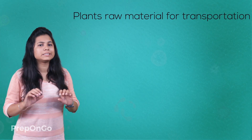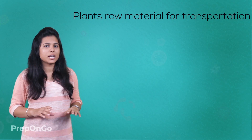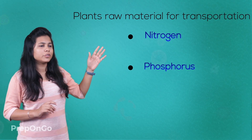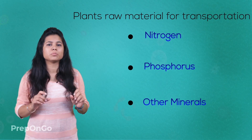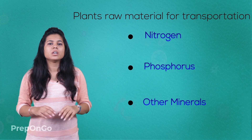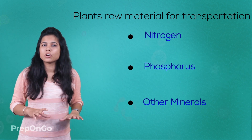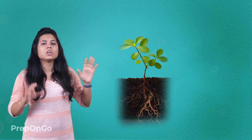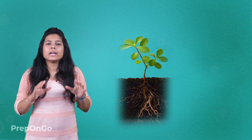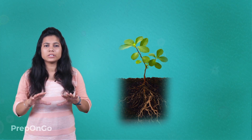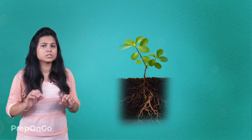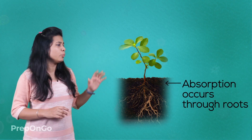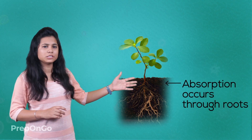Plants take up raw materials such as nitrogen, phosphorus, and other minerals from the soil. From the soil, these materials have to reach different parts of the plant, so they have to be absorbed. This absorption takes place through the special part of the plant called roots.